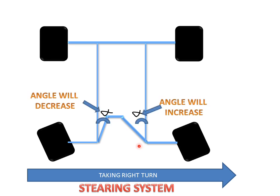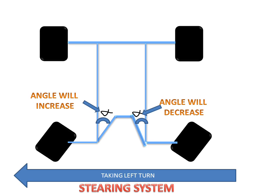When taking a right turn, the right turn will take place by the tires with the help of the steering system. And when we take a left turn, this angle will increase and this angle will decrease.